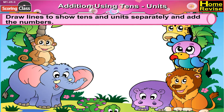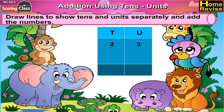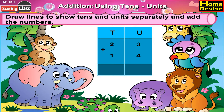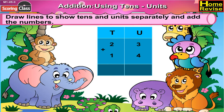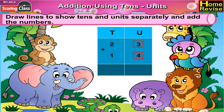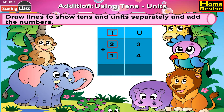Next is 23 plus 14. Now let us draw a line between 23 and 14. So above 3 and 4 write units, above 2 and 1 write tenths.